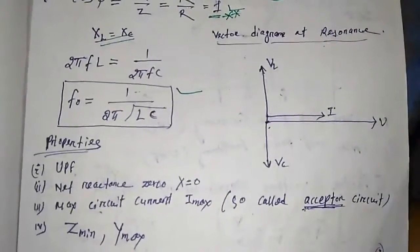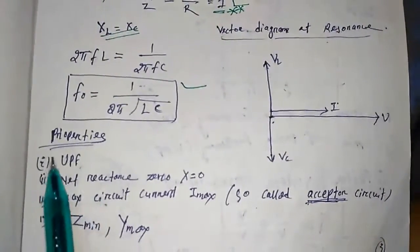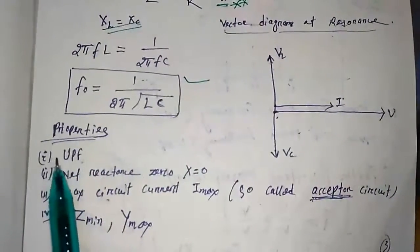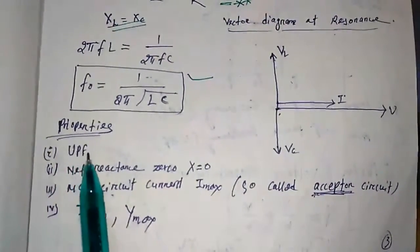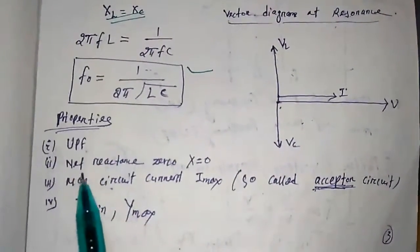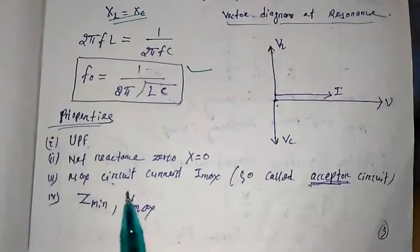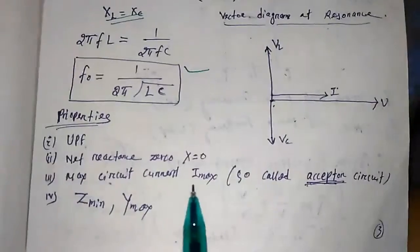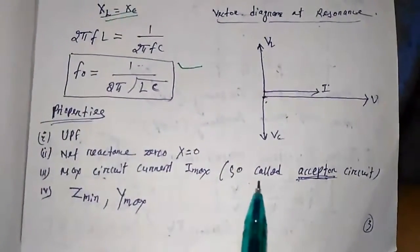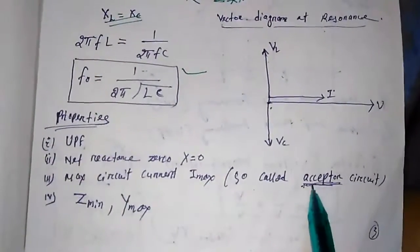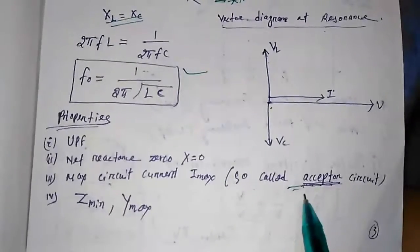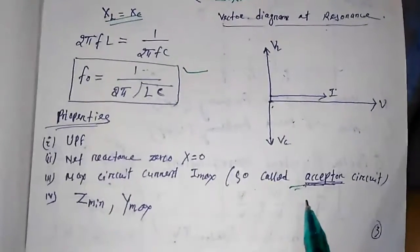Let us see some properties of this series resonance circuit. The first property is unity power factor. The net reactance is zero, that is X equal to zero. Maximum circuit current, that is, current is maximum. So this is called acceptor circuit. That is why this circuit is called acceptor circuit.